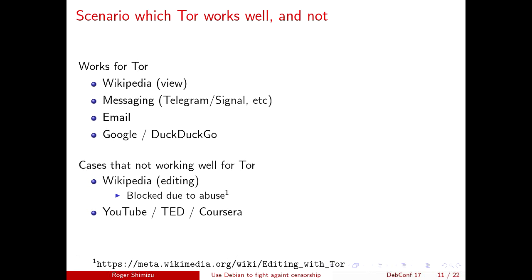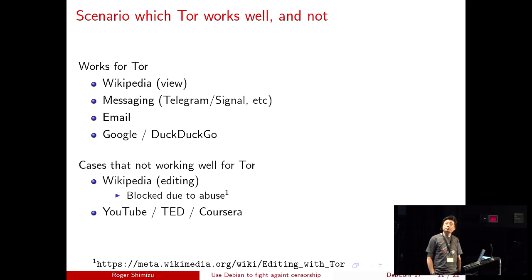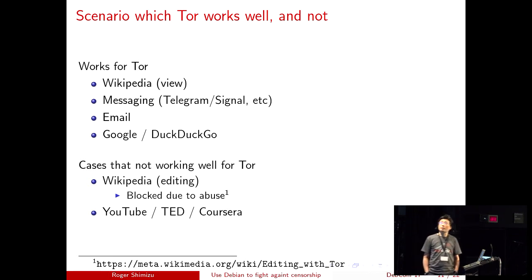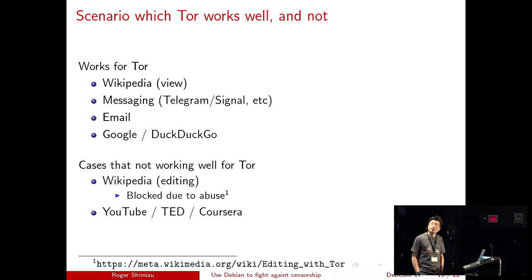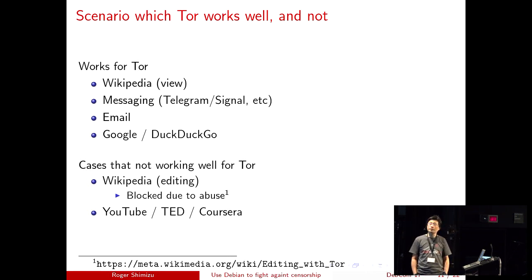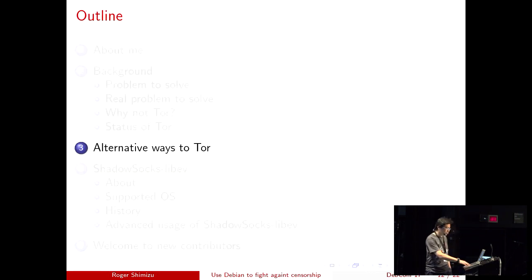Let's talk about when Tor works well and when it doesn't. For text-based applications like Wikipedia, messaging, email, and search engines, Tor works quite well. But for things like Wikipedia editing or video streaming, it's not so good.